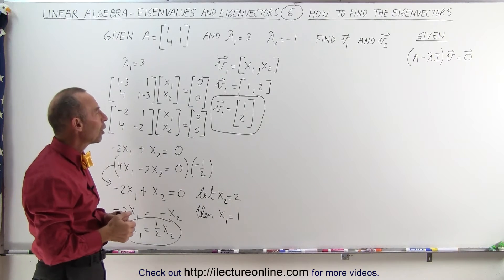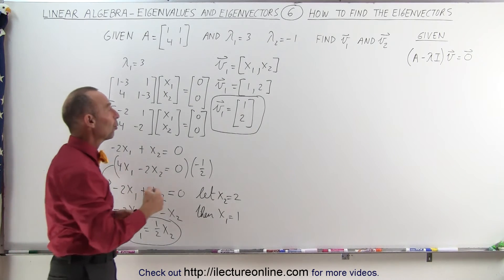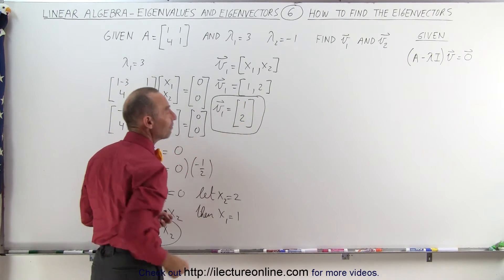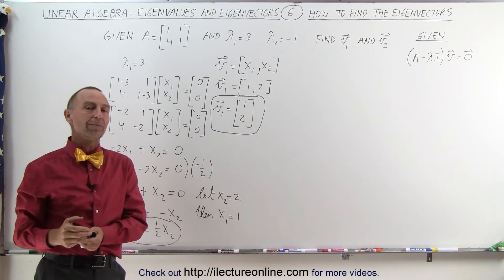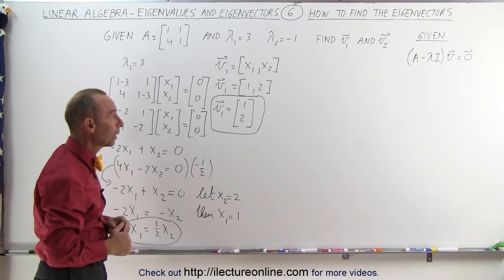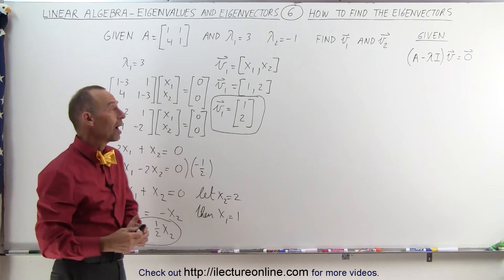Sometimes we normalize those vectors. We do it in such a way that if we add the squares of each of the elements in the vector, it should add up to 1. We'll show you later how to do that in a different video.